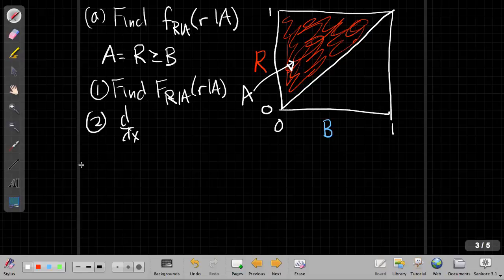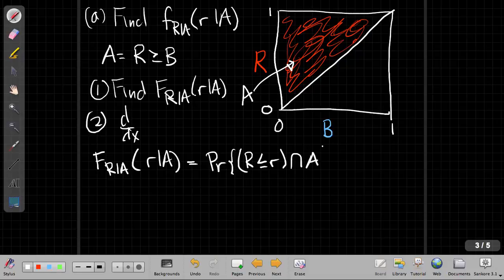Okay, so if we're going to do that, the first step, F of R given A is just start directly from the definition. So that's the probability of the intersection of two events, that R is less than or equal to the little r, and at the same time that I'm in A, which is that R is bigger than B.